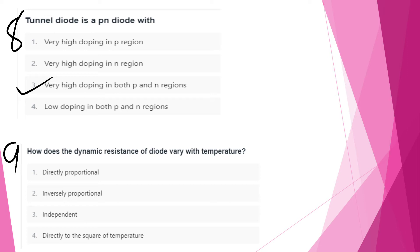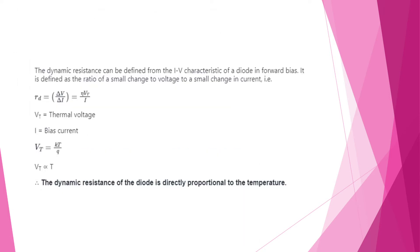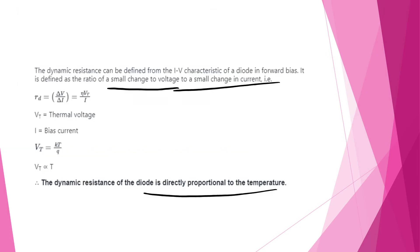How does the dynamic resistance of a diode vary with temperature? Dynamic resistance is defined as the ratio of small change in voltage to small change in current: delta V by delta I. Using the formula, rd equals Vt divided by I, where Vt is the thermal voltage and I is the bias current. Therefore, dynamic resistance is directly proportional to temperature.